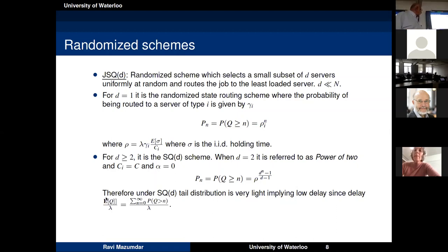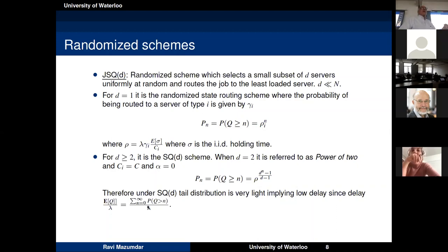The work of Mitzenmacher showed that choosing D=2 gives most of the advantage and is very close to optimal. The optimal is join-the-shortest-queue with D=N, choosing among all servers. The stability condition for any D is ρ < 1, so the stability region does not change if everything is homogeneous.